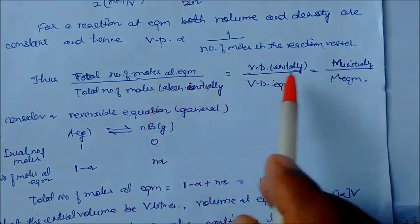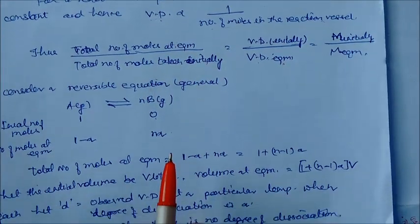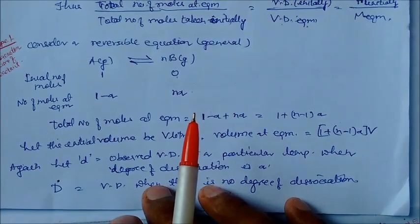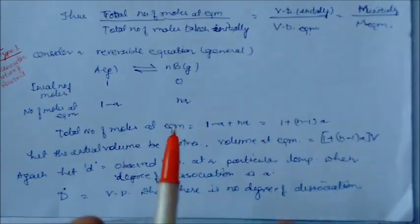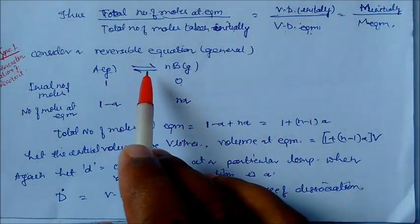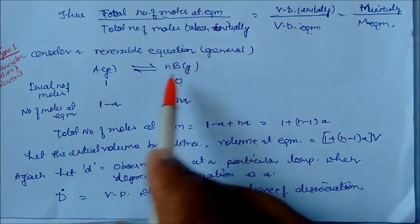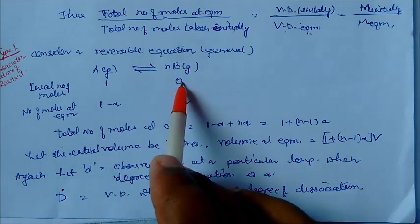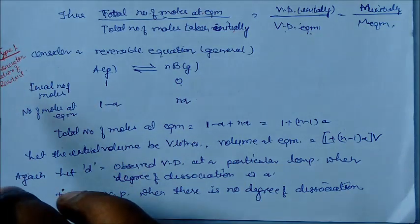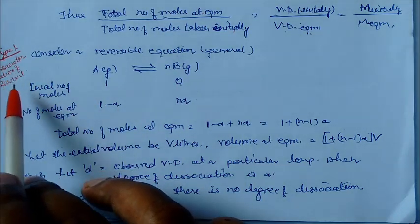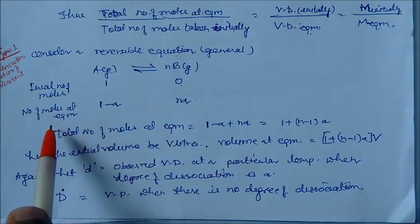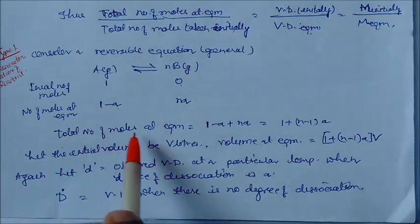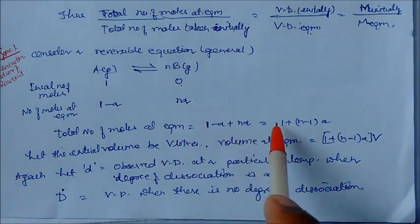Using this formula we can solve equations. Consider the general reversible reaction A(g) → nB(g). Initially moles of A = 1, B = 0. After dissociation, at equilibrium A = 1 minus alpha, B = n·alpha. So total moles at equilibrium = (1 minus alpha) + n·alpha = 1 + (n-1)·alpha.